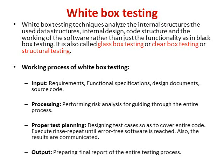The process of white box testing works on different parameters such as input, processing, proper test planning, and output. For input, it checks requirements, functional specifications, design documents, and source code — verifying whether the customer requirements are being fulfilled. For processing, it performs risk analysis to guide through the entire process. For test planning, it designs test cases to cover the entire code, then executes and repeats until error-free software is reached. Results are communicated, and the final report for the entire testing process is prepared.